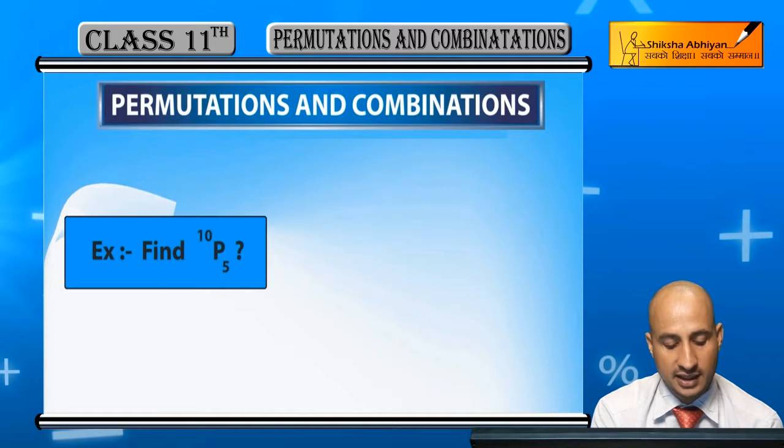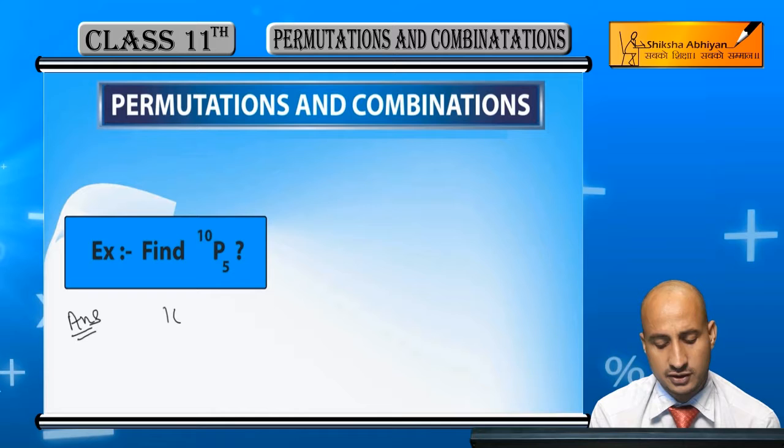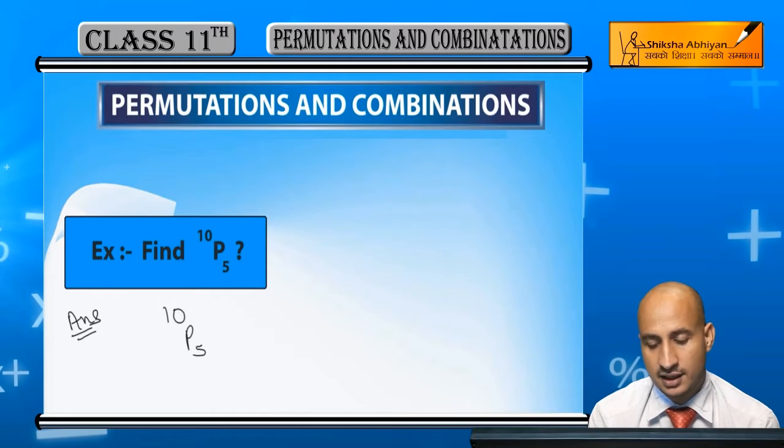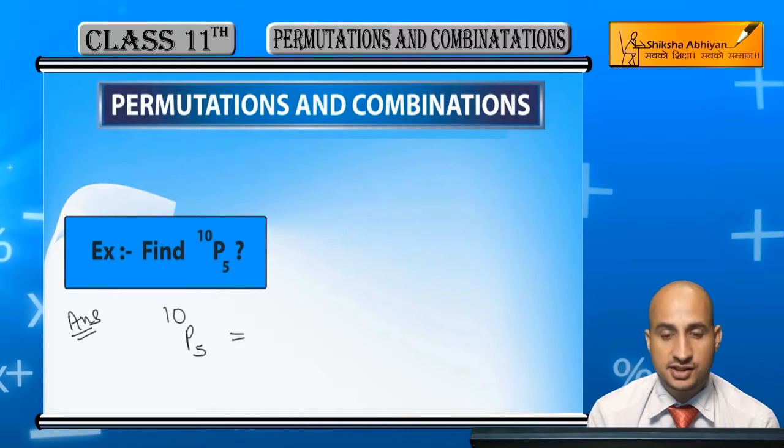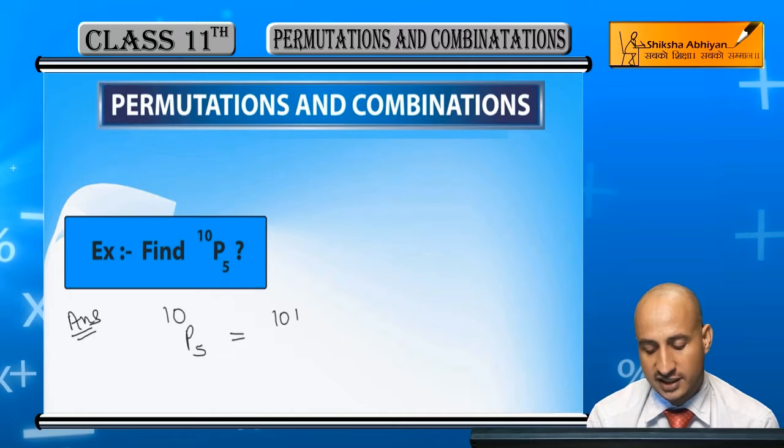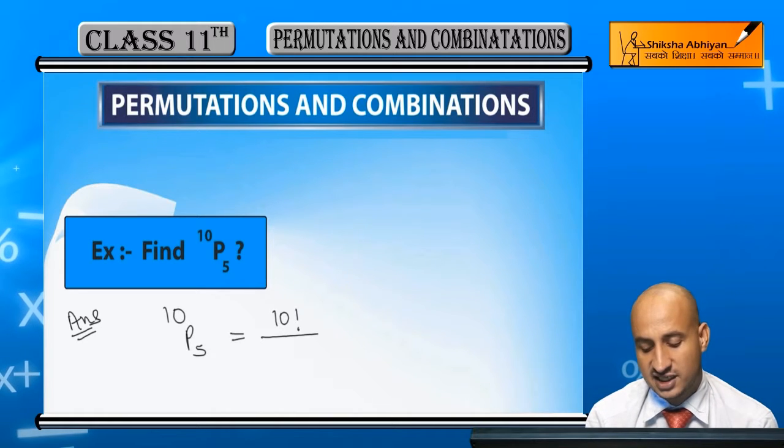You can take the value of 10P5. The value of 10P5 is simply that this is where n is 10 and r is 5. 10 factorial is n factorial upon n minus r. That is 10 minus 5 factorial.